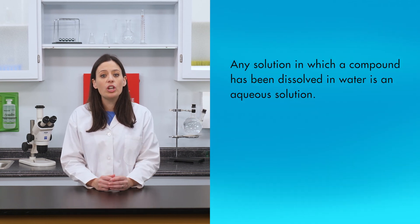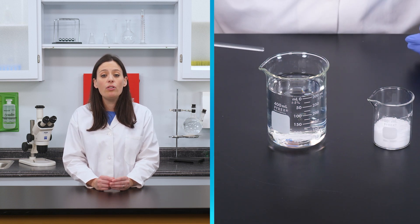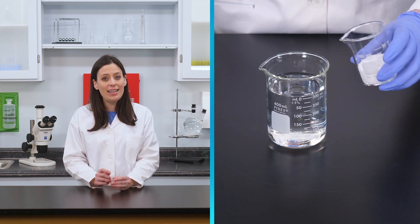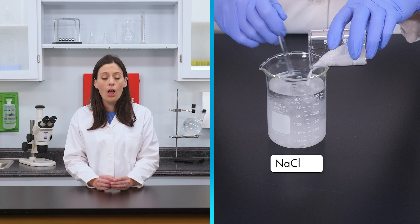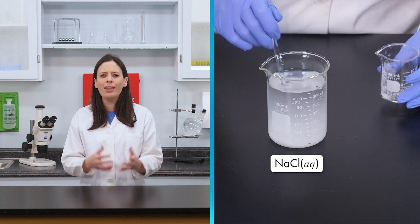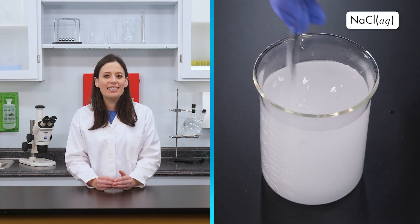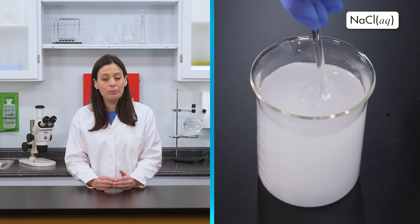Most double replacement reactions take place when two compounds are dissolved in water. When two compounds dissolve in water, they form an aqueous solution. Any solution in which a compound has been dissolved in water is an aqueous solution. The chemical formula for an aqueous solution consists of the chemical formula for the compound followed by the symbol (aq) in parentheses. For example, the chemical formula for an aqueous solution of sodium chloride is NaCl(aq).